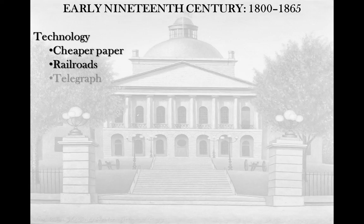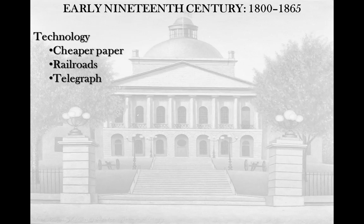We see the rise of the telegraph, which was essentially, for them, text messaging — instant communication with all different parts of the world. That again makes the world smaller. If you can communicate 3,000 miles away that something is happening, you can react better; you can get soldiers, food, or supplies onto those railroads. All these technologies are changing how people communicate, how they interact, how they understand the world, and how they understand their role in it.